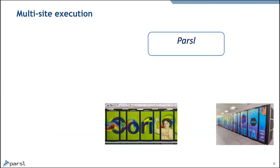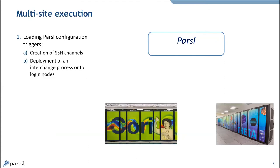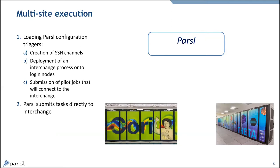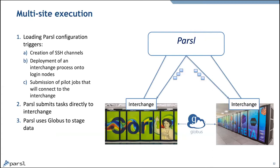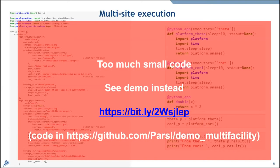To give an example of multi-site execution: a Parcel configuration specifies two sites. Loading that configuration creates SSH channels, which are used to deploy an interchange process onto the login nodes and submit pilot jobs that connect to that interchange. Parcel submits tasks to the interchange and uses Globus to stage data — Globus data transfer goes directly between sites rather than back through Parcel. The code for this was made public this morning, so if anybody's interested they can see it, though they may not be able to run it yet.